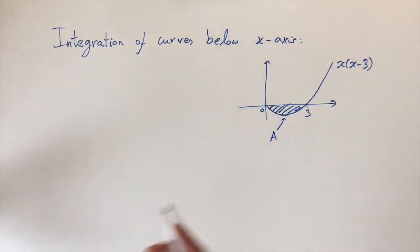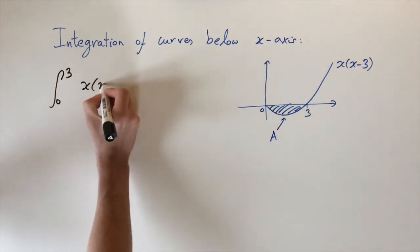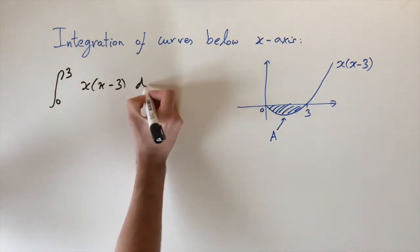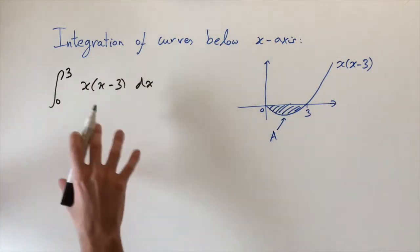So first off, let's see what happens if we integrate this function between 0 and 3 of x times x minus 3 dx. So this corresponds to this area, but if we integrate this we should get a negative value.